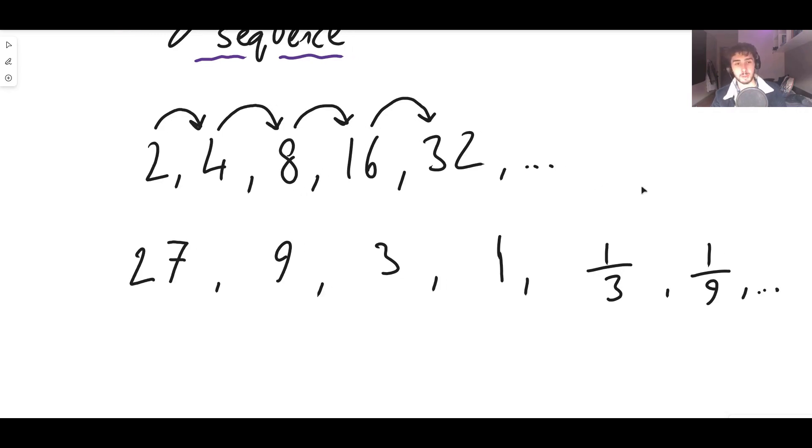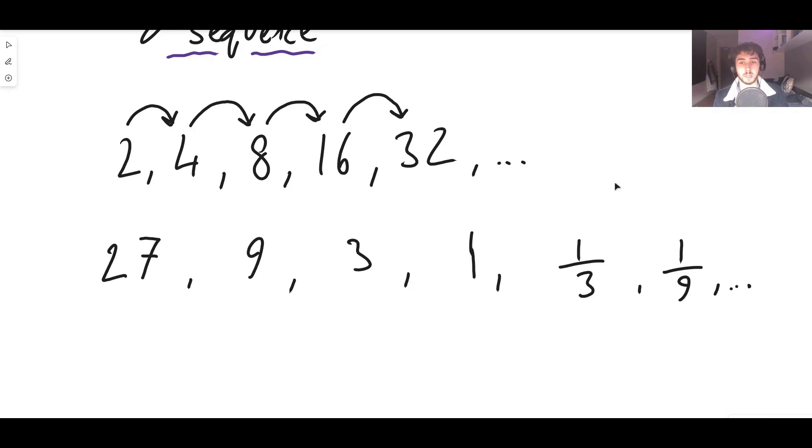This would also be a geometric sequence because each term has been multiplied by a third to get to the next one. So 27 times a third is 9, 9 times a third is 3, 3 times a third is 1, 1 times a third is a third, a third times a third is a ninth, etc. So this is also a geometric sequence as well.